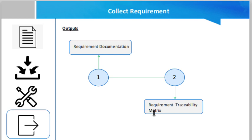The second output is the requirement traceability matrix, which is a grid that links product requirements from their origin to the deliverables that satisfy them. It helps ensure that each requirement adds business value by linking it to the business and project objectives. It provides a means to track requirements throughout the project lifecycle, ensuring that requirements approved in the requirements documentation are delivered at the end of the project, and provides a structure for managing changes to the product scope.